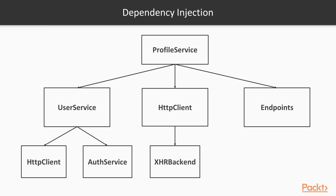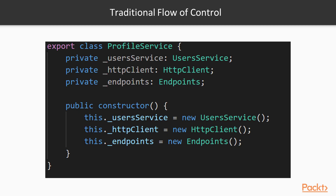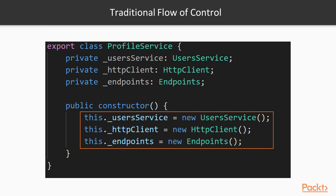Let's see how we would approach this using the traditional approach without dependency injection. We would probably instantiate the dependencies in the constructor using new. But notice that in order to do that, you would need to know how each one is initialized — for example, that the user service needs an instance of the auth service and the HTTP client. Without them, the constructor would fail. If we used this snippet, we would get an error saying we can't call the user service constructor without passing any arguments. The deeper your dependency tree goes, the harder this gets.